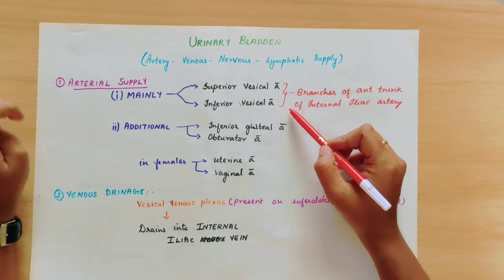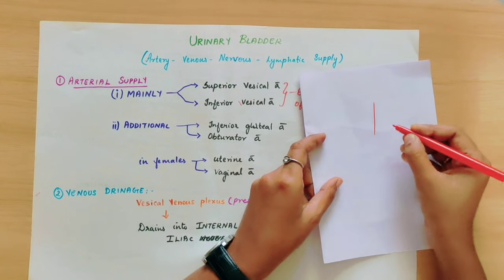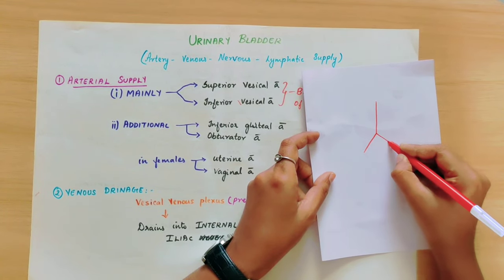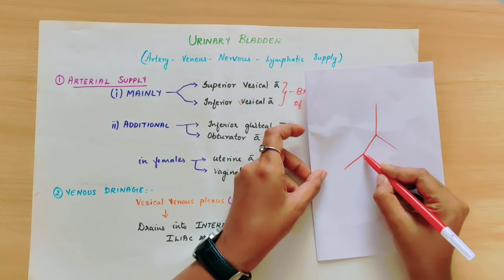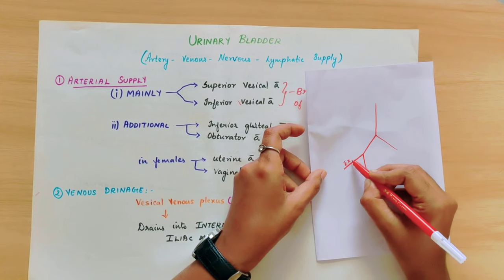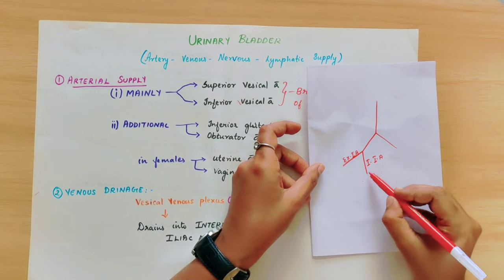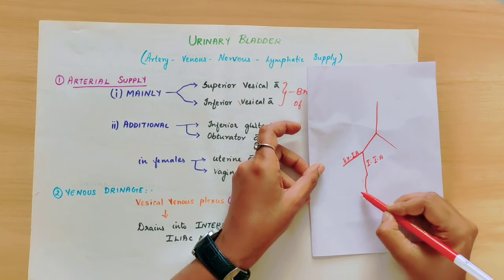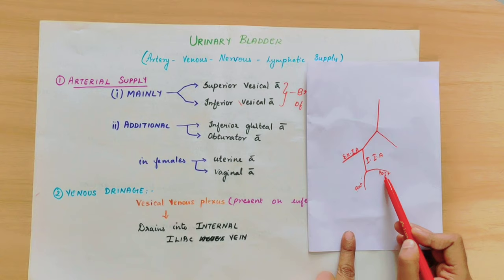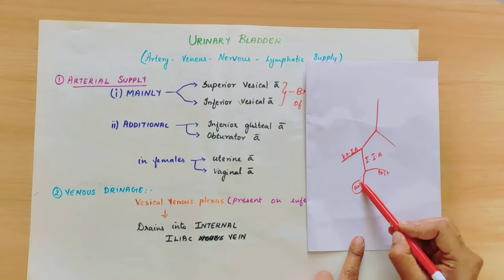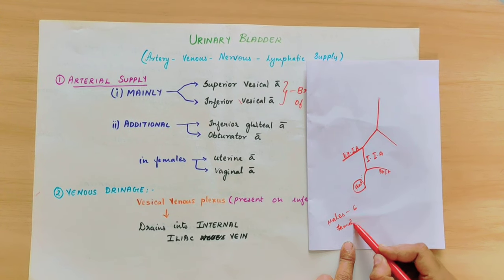The two arteries are branches of the anterior trunk of the internal iliac artery. The abdominal aorta divides into the common iliac artery, which further divides into the external and internal iliac artery. The internal iliac artery has an anterior and posterior division. In the anterior division, males have six branches and females have seven branches.